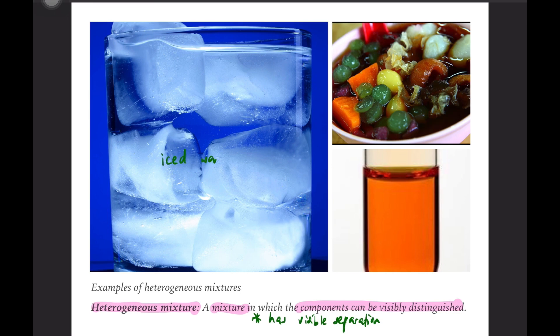For example, ice water. Water that has ice like this. We can clearly see the difference between ice and water. Clearly, which is ice, which is water. So that means there is visible separation. That's why this is a heterogeneous mixture.